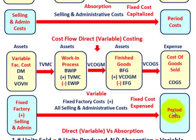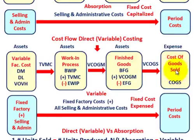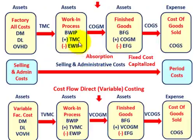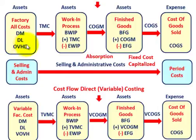Period costs are expensed when incurred and are not included in cost of goods sold or inventory. With absorption costing, we take all factory costs — direct material, direct labor, and both variable and fixed overhead — totaled together as total manufacturing costs flowing into work in process.